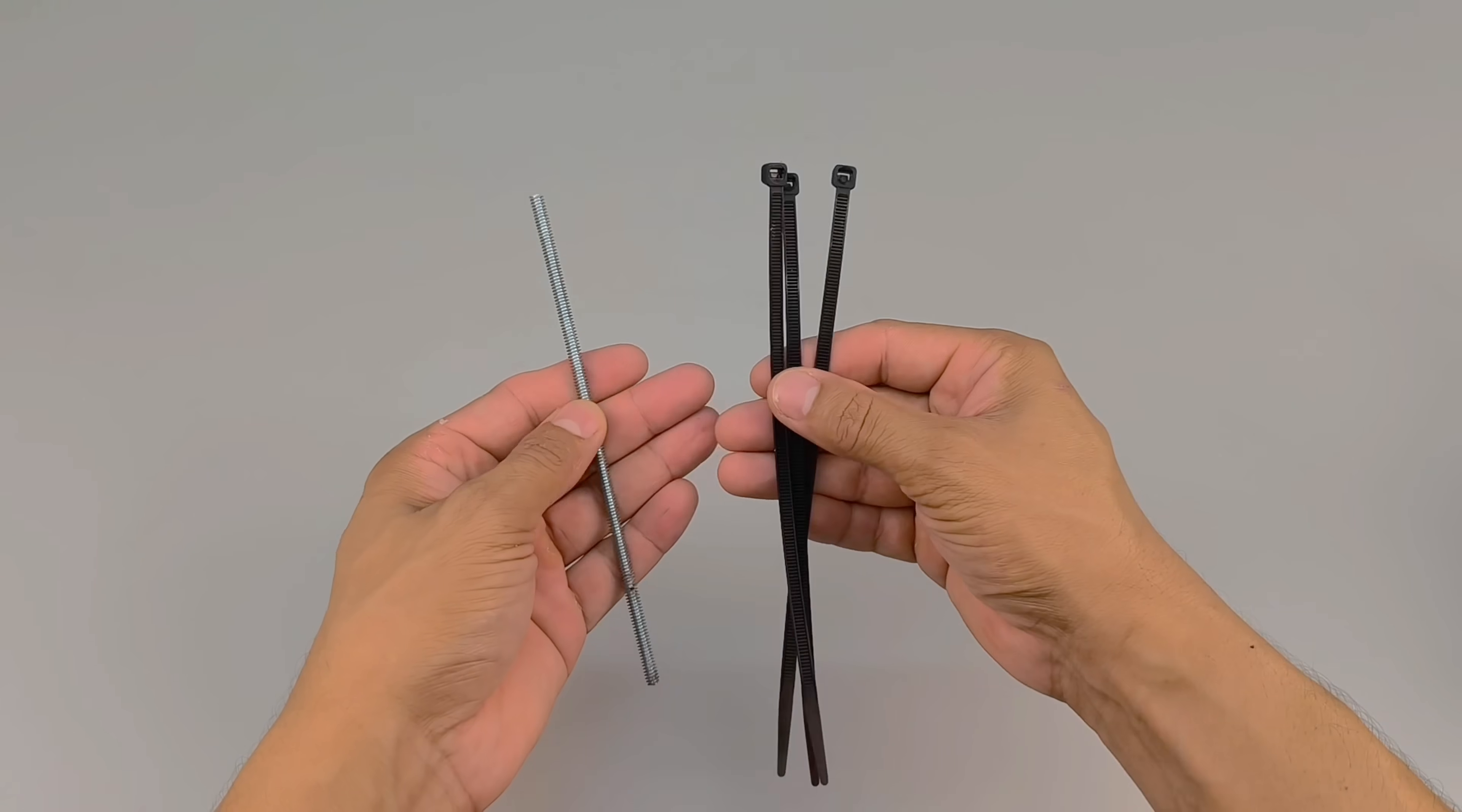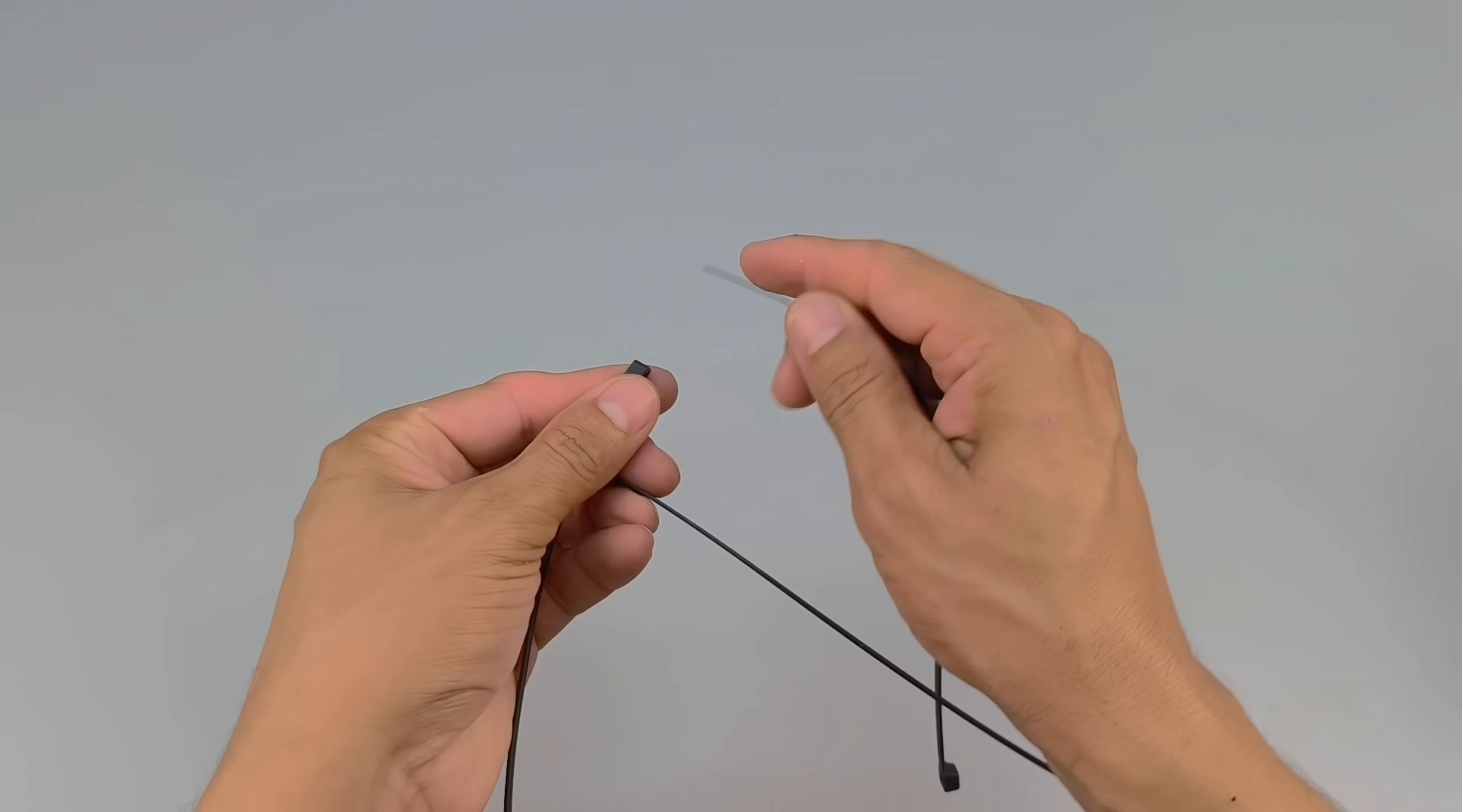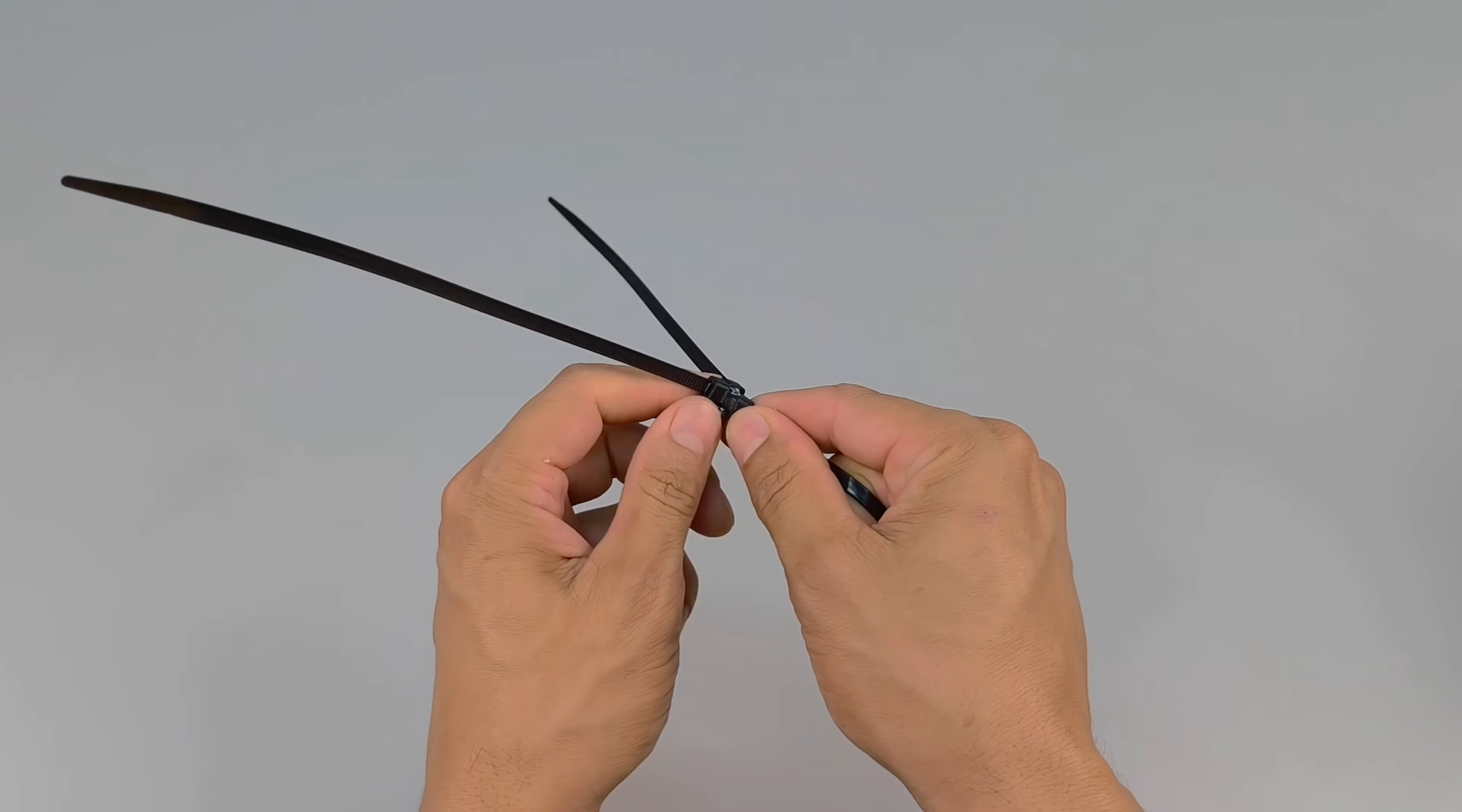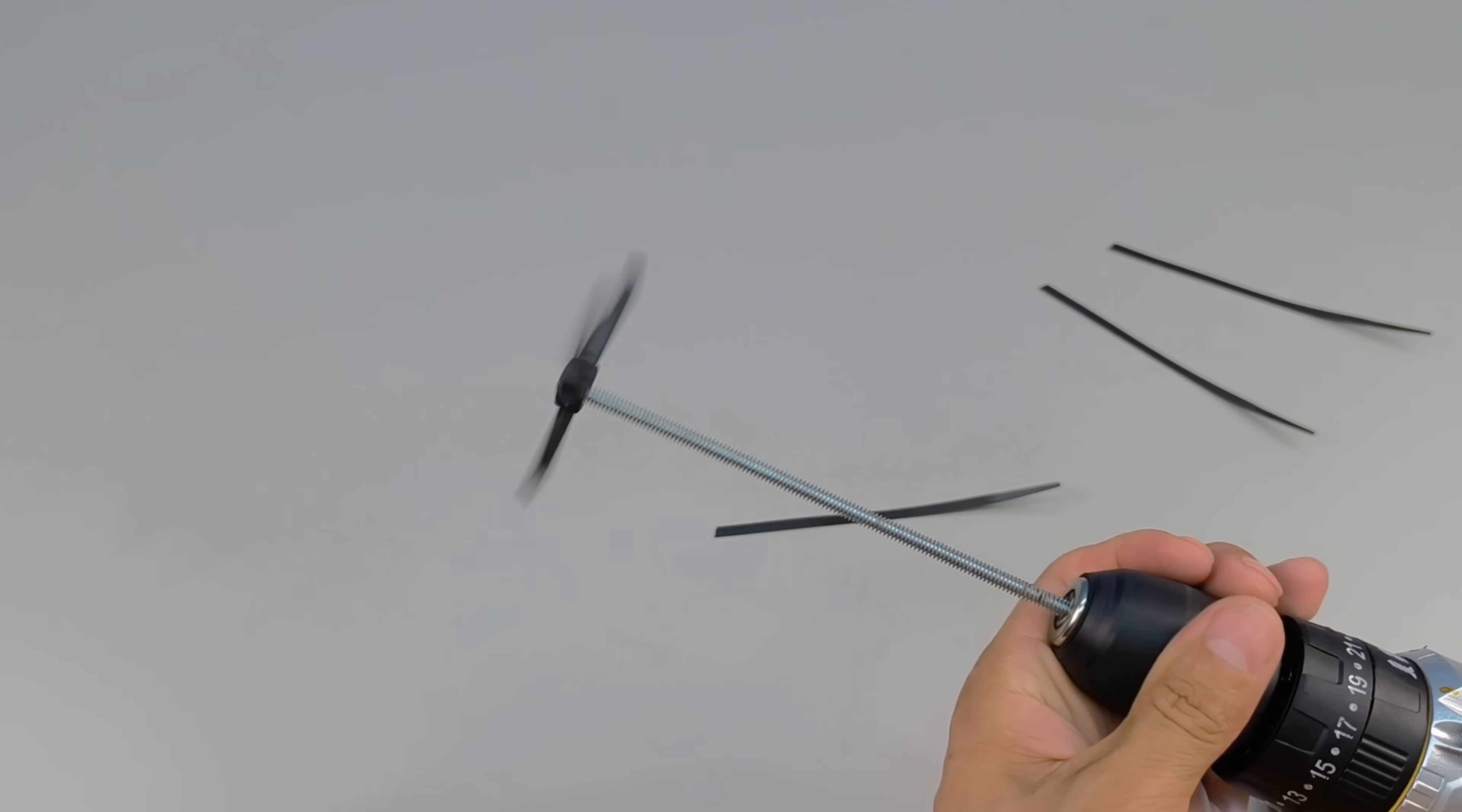But combining these two ingredients isn't as simple as it seems. To facilitate the process and ensure a more efficient and homogeneous mixture, I improvise an ingenious and creative device. I take three sturdy nylon cable ties, carefully intertwine them one by one, and firmly attach them to the end of a metal rod. The final shape resembles a small homemade propeller, simple yet extremely functional, and I quickly fit everything into the chuck of my electric drill.